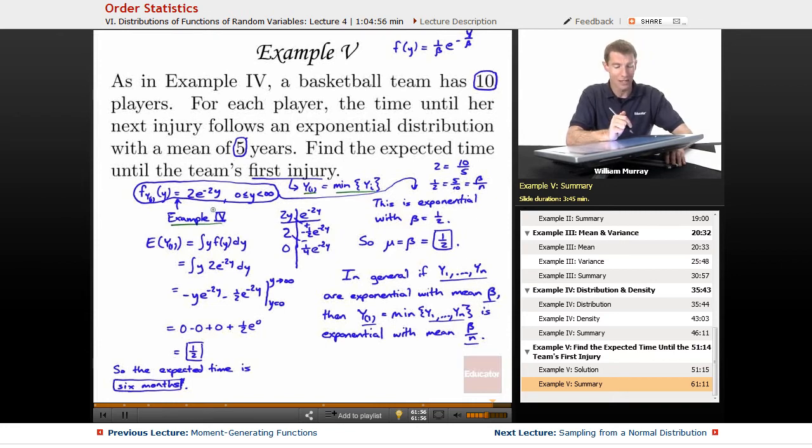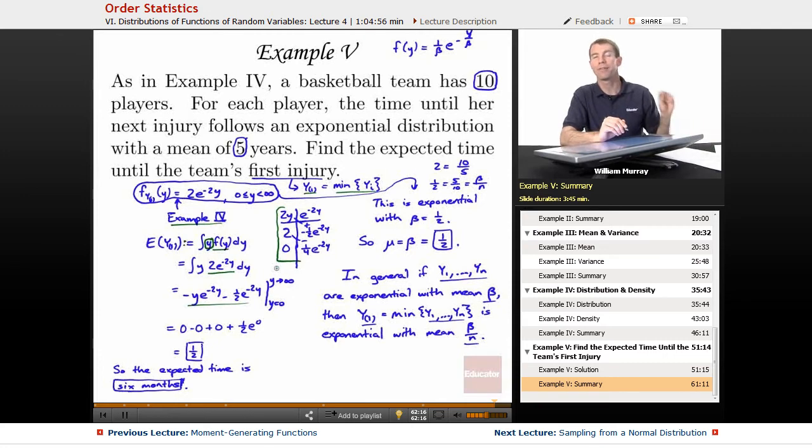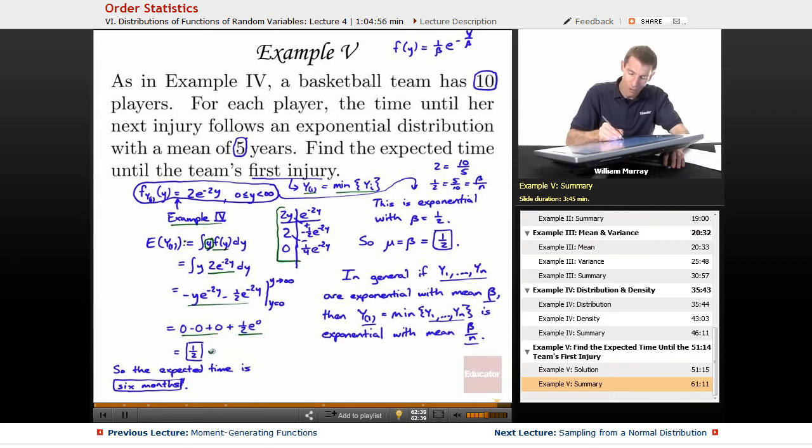Now, the long way to find the expected value of that is to use the definition of expected value. The definition says you integrate Y times the density function, and that's what I did there. I dropped in the density function, and I did the integral using integration by parts. If that tabular integration was unfamiliar to you, I cover that in my Calculus 2 lectures here on educator.com. And when I plugged in the infinity, they all dropped out. When I plugged in zero, I got exactly one half, so my expected time is one half a year, which I translated into six months. That was the long way.